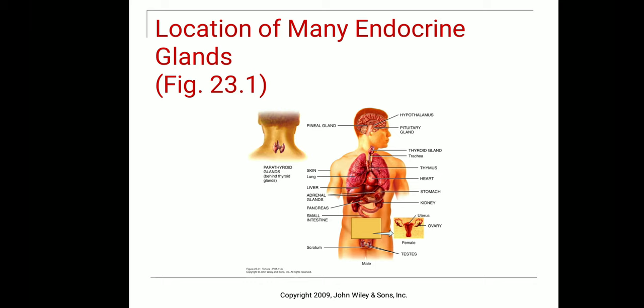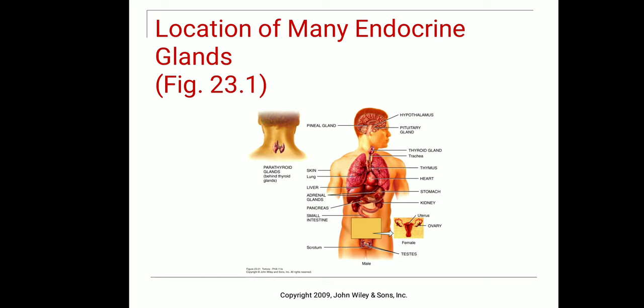Let us see the location of many endocrine glands. We have the hypothalamus and pituitary gland, which are the master glands. The pineal gland is the smallest gland in our body and helps in maintenance of circadian rhythms. The thyroid and parathyroid glands are present at the neck region above the larynx. The thymus gland secretes immune hormones such as leukotrienes or prostaglandins, which help in the maturation of WBCs. The adrenal glands help in glucose metabolism and mineral absorption, and also maintain stress levels. The gonads help in the production of ova in ovaries and spermatozoa in testes.